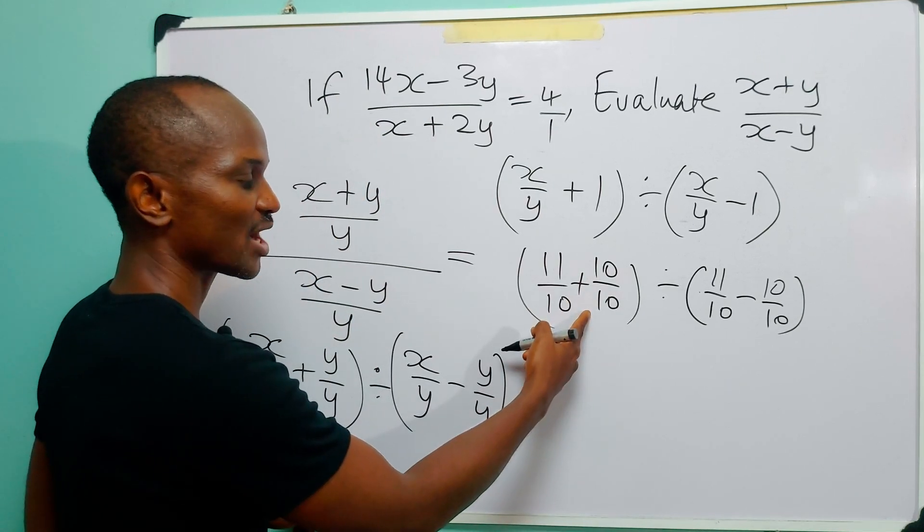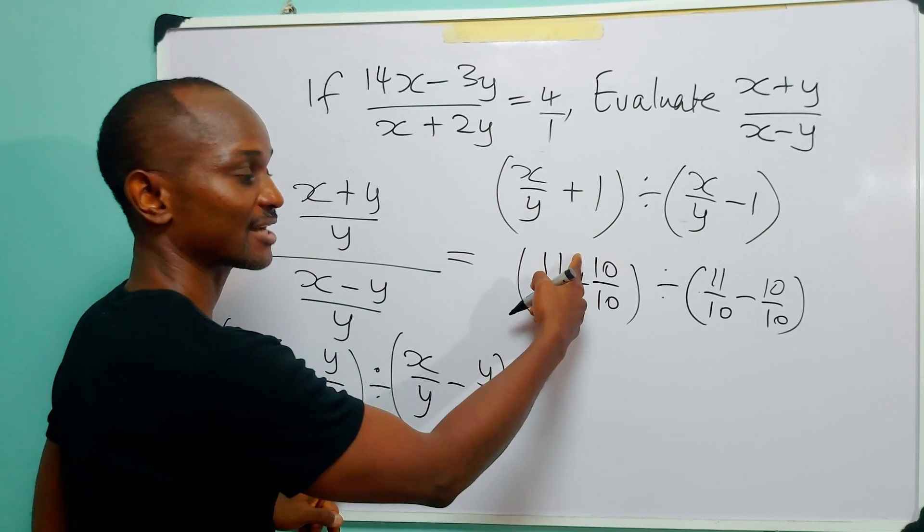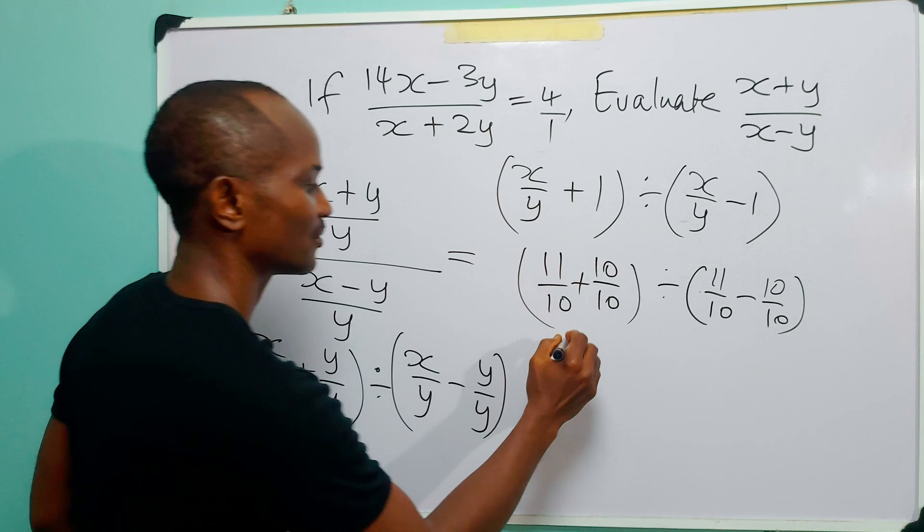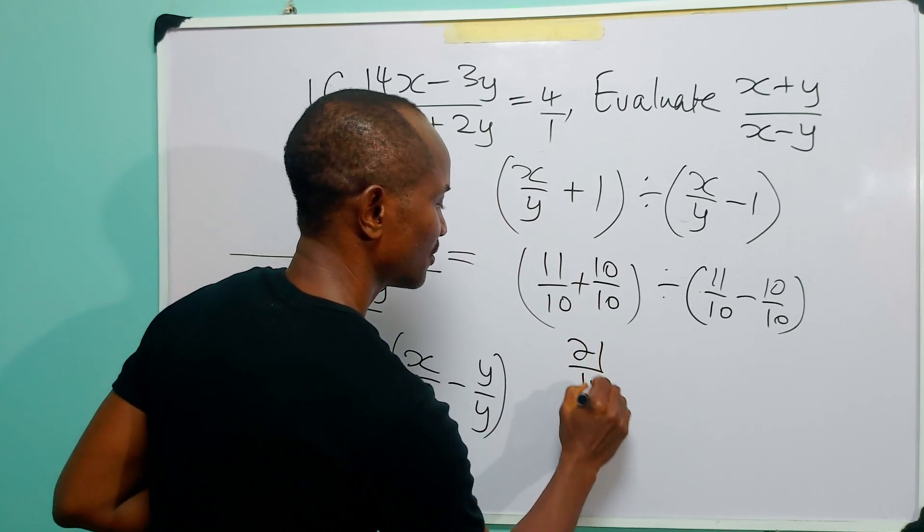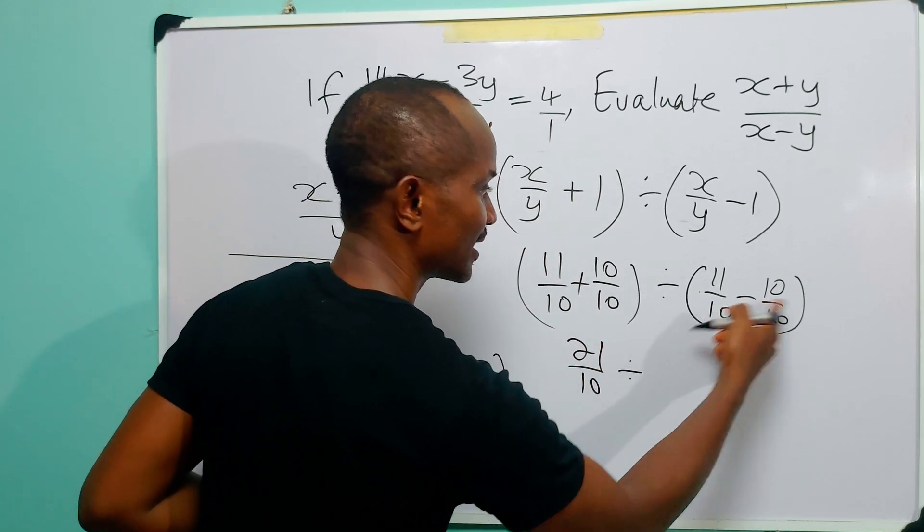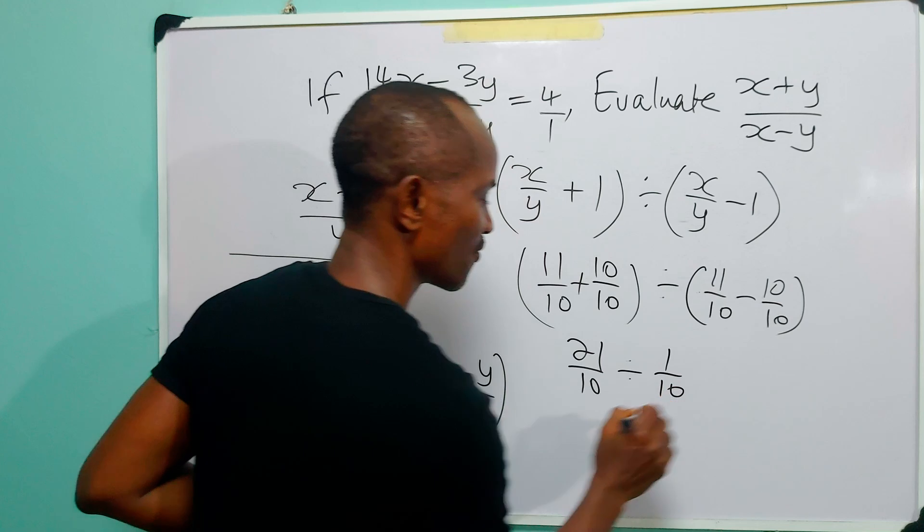Since these two fractions have the same denominator, we can just add the numerator. So here we have 21/10 divided by 1/10.